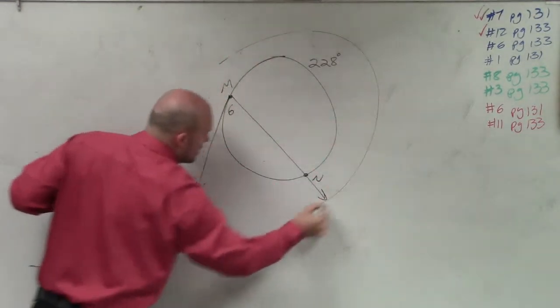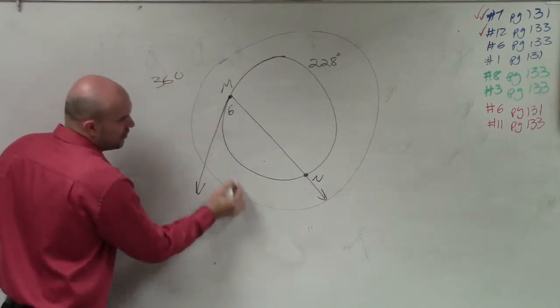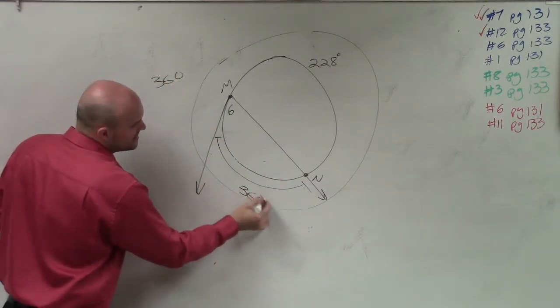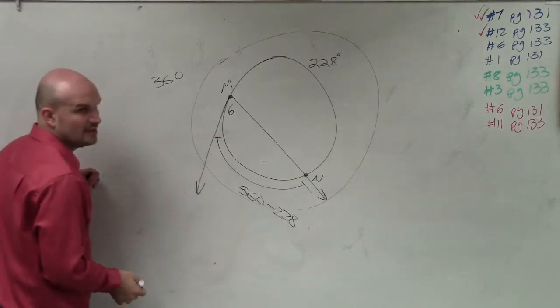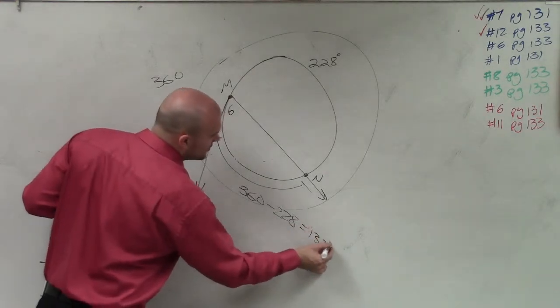We know that the distance measure of all the arcs around the circle is 360, so this arc from here to there is going to be 360 minus 228. So I did 360 minus 228, I get 132 degrees.